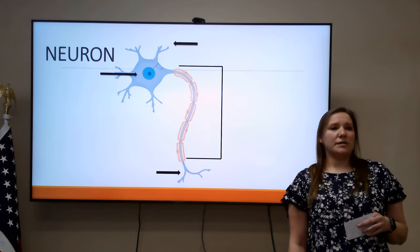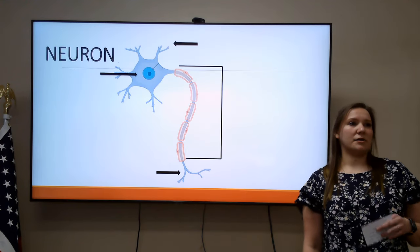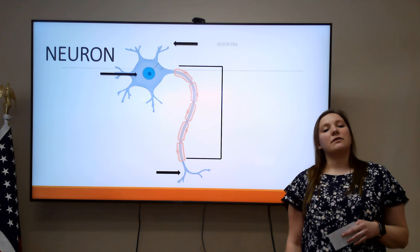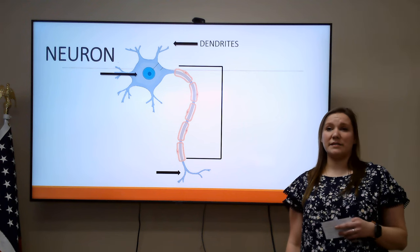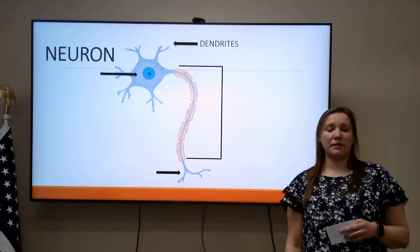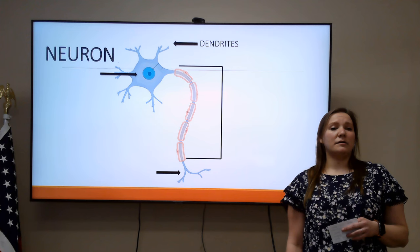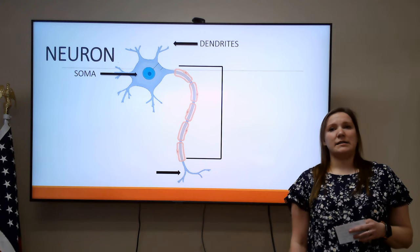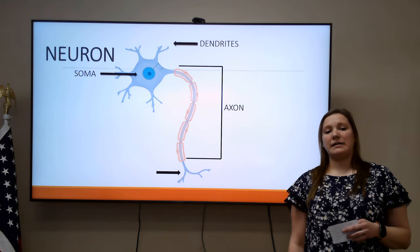The most basic unit in the nervous system is going to be the neuron. It composes of a dendrite, which receives a signal or stimulus, the soma, or the cell body, the axon, and the axon terminal.